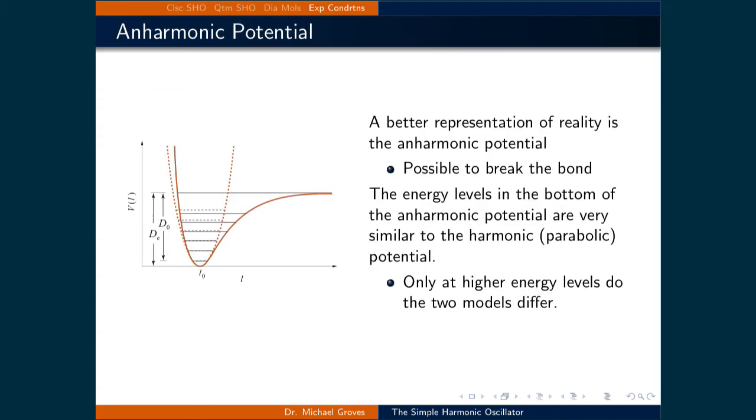Up until now, we've only focused on the harmonic potential. A better representation of reality is the anharmonic potential. This potential better mimics the possibility of breaking the bond by going to zero for high L. This is not described in the harmonic potential since it's a parabola that goes to infinity on both ends. While the anharmonic potential is a more accurate picture of reality, the harmonic potential shares very similar energy levels at the bottom of the potential. Thus, when molecules are close to the ground state, the harmonic potential can typically be used as an appropriate substitute.